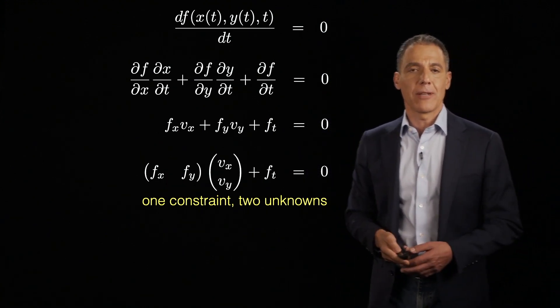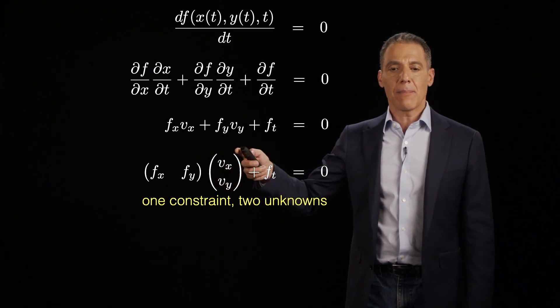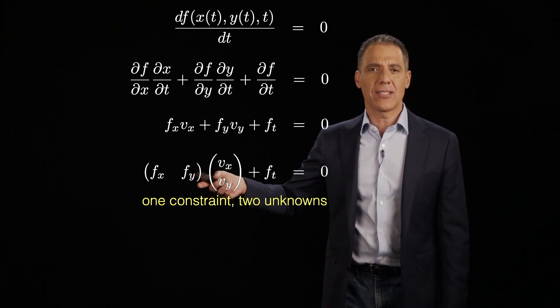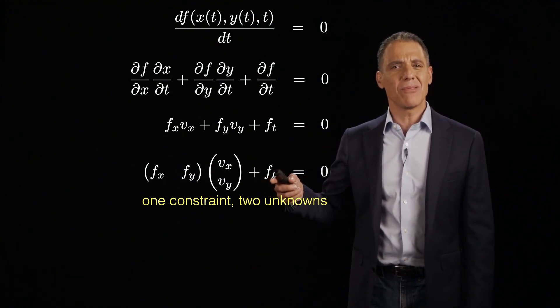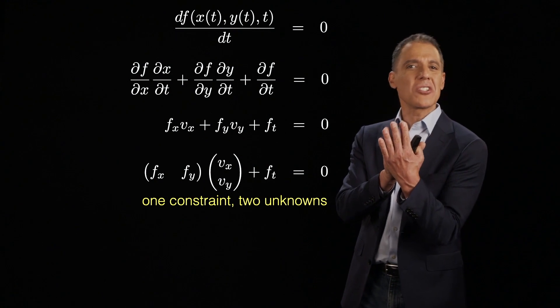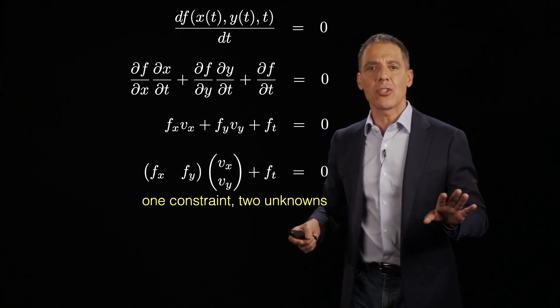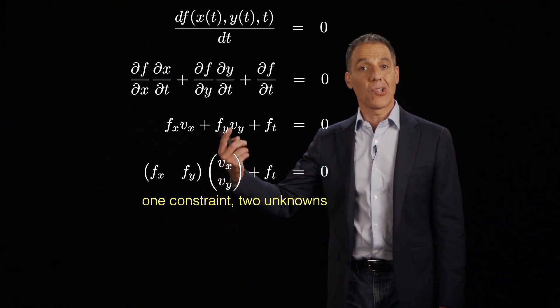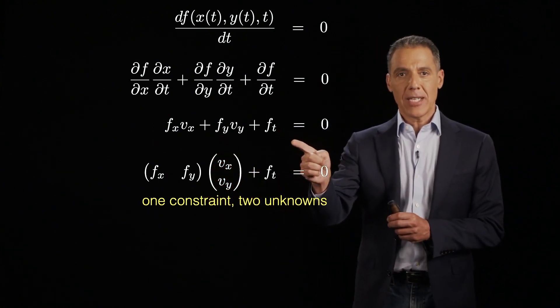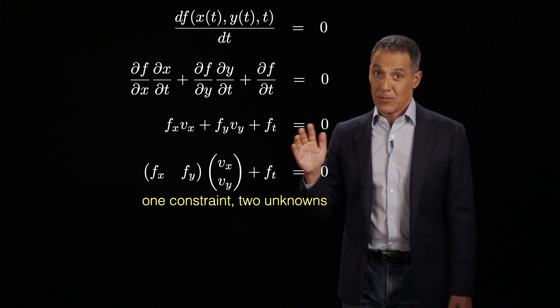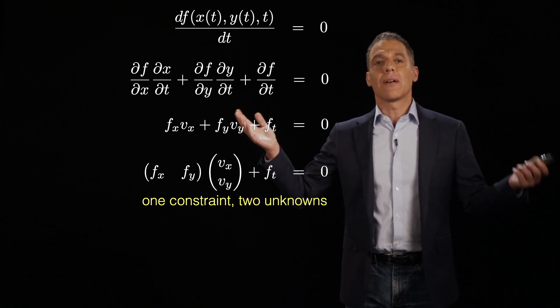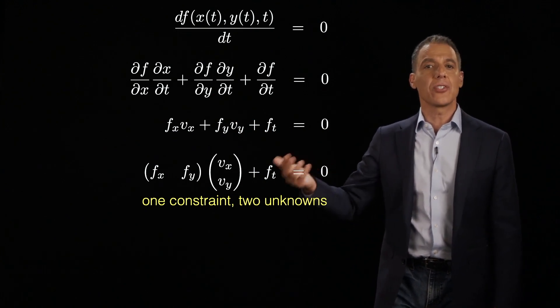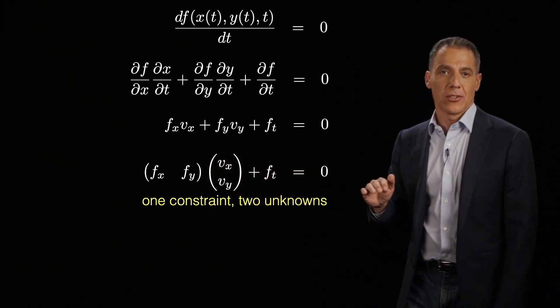Now, let me rewrite this in a linear algebraic form because then we'll see clearly where we are. So I've got my unknown v_x, v_y. That's what I want. And I've got things that I can measure. I know how to compute f_x, f_y. I can measure f_t. And I want to know v_x, v_y, the velocity, the motion. What direction am I moving in and by how much? Now, where am I here? The good news is I've got a linear equation. We love linear equations. They're easy to solve. The bad news is I have two unknowns and only one constraint. So I have an under-constrained system of linear equations. So I'm sort of dead in the water.